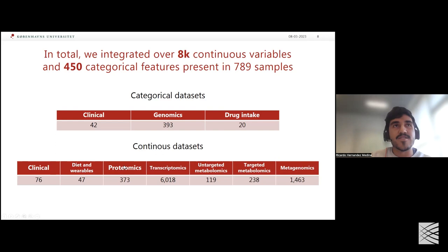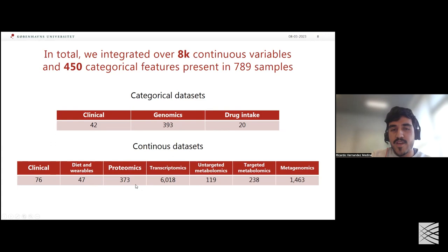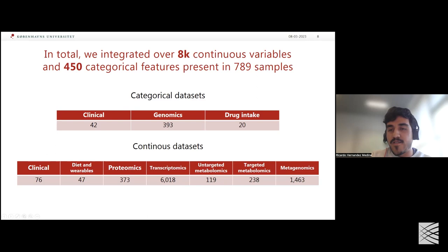Here's a breakdown of the variables: 393 genomic variables, 20 different medications, around 300 proteomic variables, 50 variables for diet and physical activity, 6,000 transcript readings, 300 metabolites in total, and around 1,400 taxa described per patient.